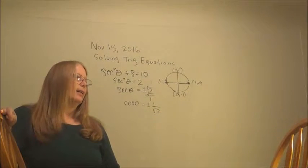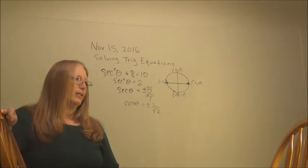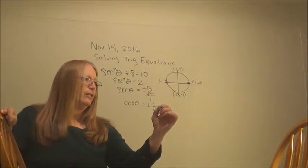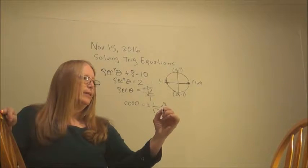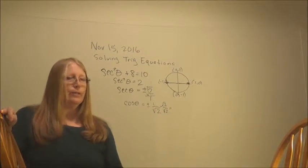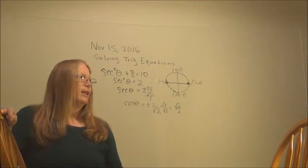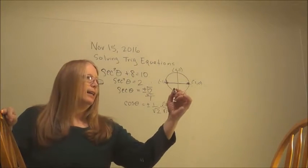So therefore, where do I find that on the unit circle? Well, it doesn't look familiar. So when that happens, let's rationalize. So we multiply the top and the bottom by the square root of 2. And I get square root of 2 over 2. Now that looks more familiar. So I can find that.